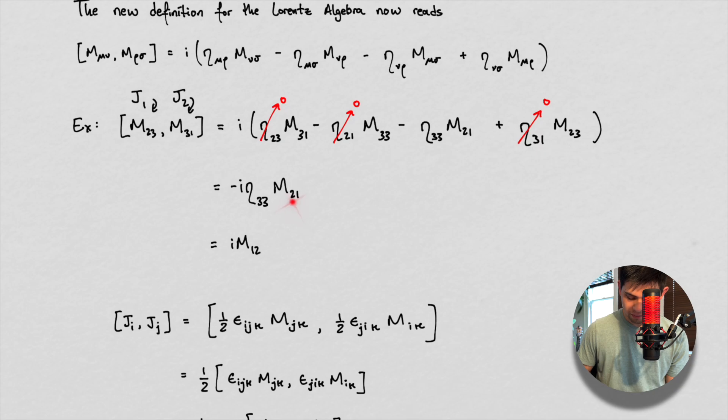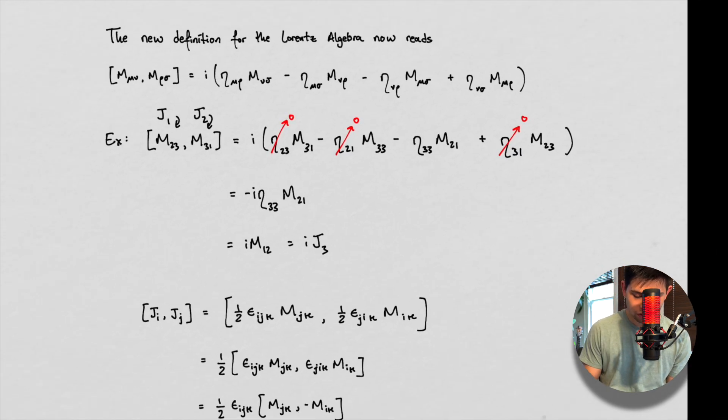And then M, we have minus M21. Well, that's just M12. And what's M12? Well, that's IJ3. So this works. You can do this for, you try this out for, say, like, J3 and J2. You can do this for multiple examples. What you'll find out is that this formula actually works as a new definition for the Lorentz Algebra.